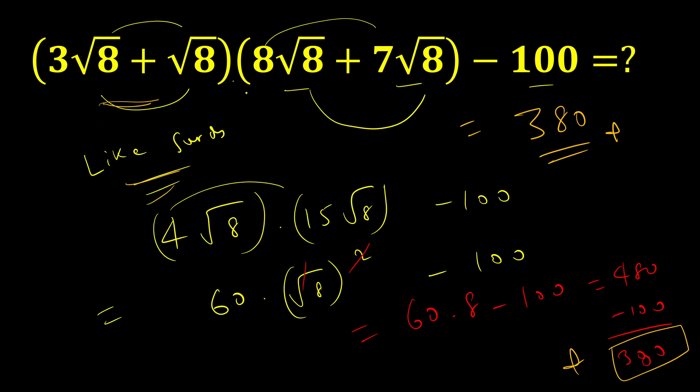So this was a very straightforward question. Once you identify that they are like surds, you can add them up and you can multiply, and at last you can subtract. So let's meet in some other videos where we will discuss more such questions. Thank you.